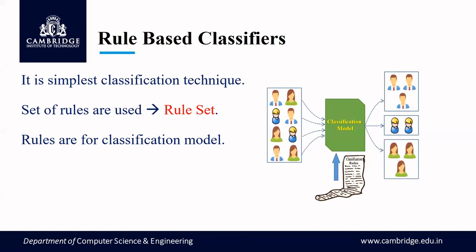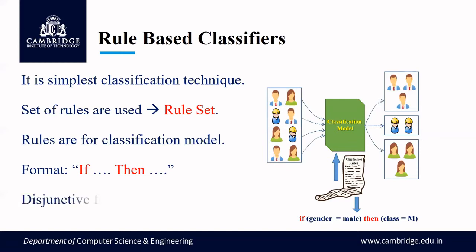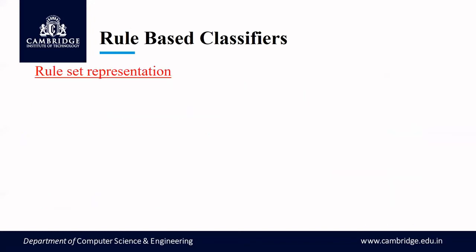When we talk about the rule set, every rule will be in the form of if-then. Its representation will be in a disjunct form. We will now see the rule set representation — how you are going to represent it, and what the disjunct form means.